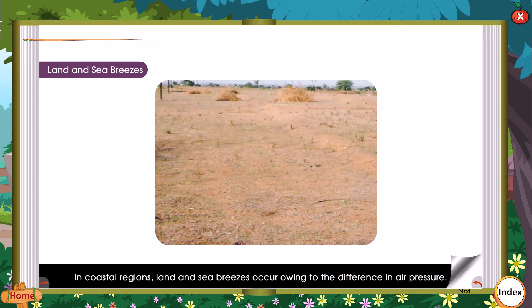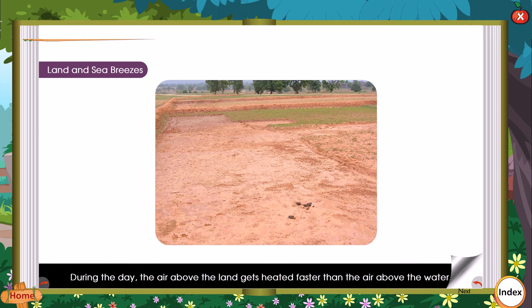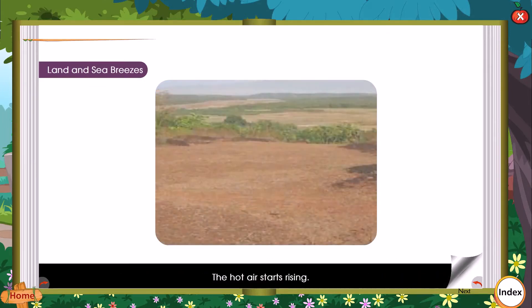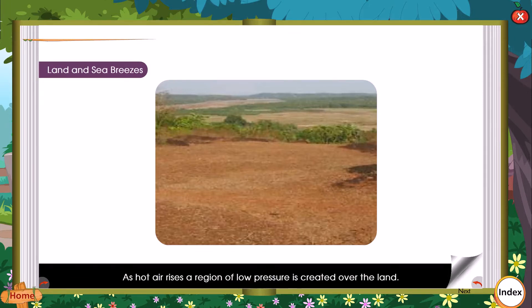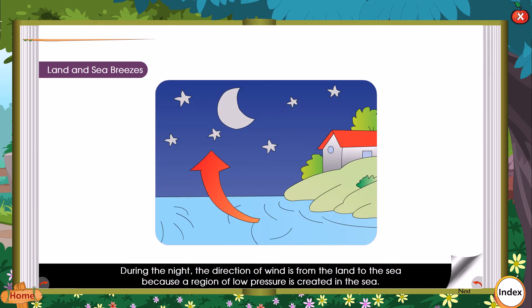In coastal regions, land and sea breezes occur owing to the difference in air pressure. During the day, the air above the land gets heated faster than the air above the water. The hot air starts rising, and a region of low pressure is created over the land. Cold air from the sea moves into this area of low pressure.